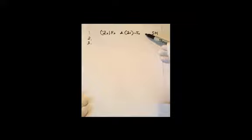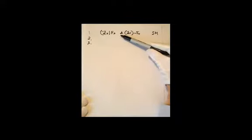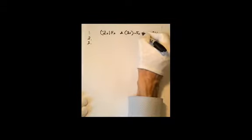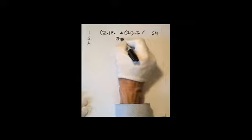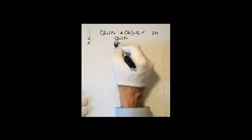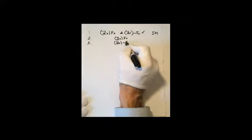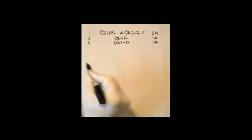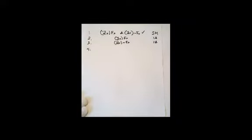The sentence in line one is a conjunction; the main logical operator is the ampersand. So we decompose it using the conjunction decomposition rule, writing down: there is an x F(x) and there is an x not F(x) — and that comes from line one by conjunction decomposition.